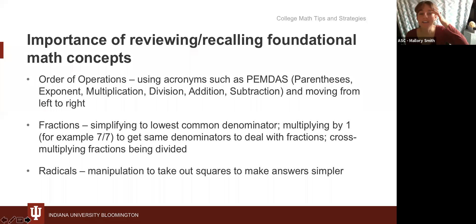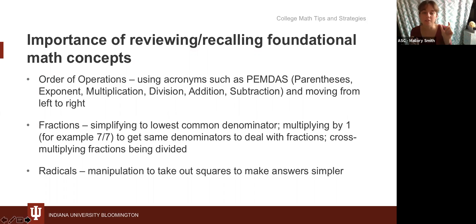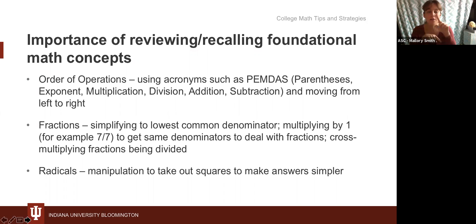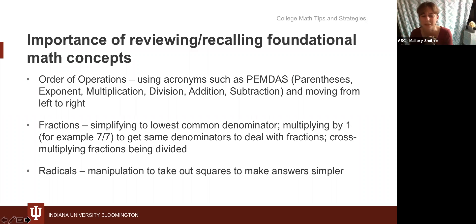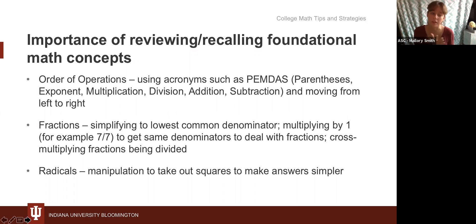Basically, whatever number is inside of the radical, you're trying to break it into pieces so that some of those pieces are perfect squares that you can take out of the radical — that's how we simplify it. Prime factorization is really important for this. If you take the prime factorization of a number and find two of the same factor — like two twos — you know there's a four in there. So for 60, for example, we ended up with two twos, meaning 60 is divisible by four, which is a perfect square we can take out of the radical.